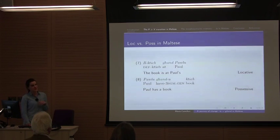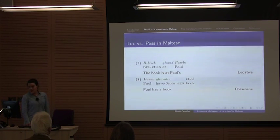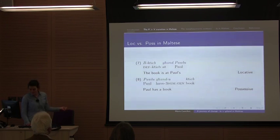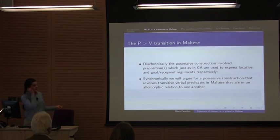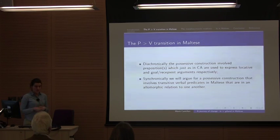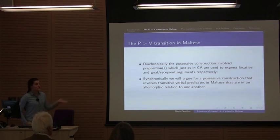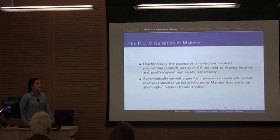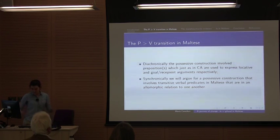When we consider locatives and possessives in Maltese, we find the same sort of preposition 'and'. Example 7 is a locative construction — 'il-ktieb and Pawlu' — as opposed to example 8, which is a possessive structure — 'Pawlu and u ktieb'. What I really want to say is that this preposition 'and' has actually developed as a verb in possessive constructions in Maltese. While diachronically the possessive construction involved prepositions, synchronically I will argue for a possessive construction that involves transitive verbal predicates. That would be one of the contributions to the ongoing discussion on possessive structures in Maltese. Additionally, the two different prepositions used in classical Arabic in free variation are actually allomorphically related in Maltese.